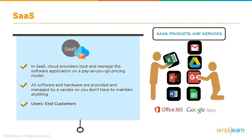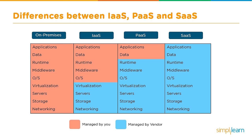In SaaS, everything is managed by the vendor — be it the hardware or the software. We pay for the service through a pay-as-you-go subscription model, and the end users are the end customers themselves. Now, let's put together everything and compare the different types of service models. This chart explains the difference between the four models, starting from on-premises to IaaS, then PaaS and SaaS. The resources managed by us are greatest in on-premises, a bit less in IaaS, further reduced in PaaS, and nothing to manage in SaaS.